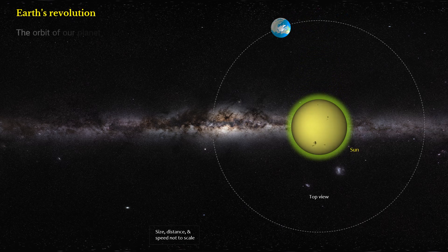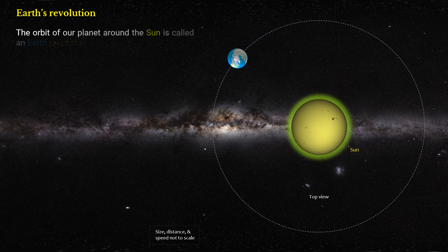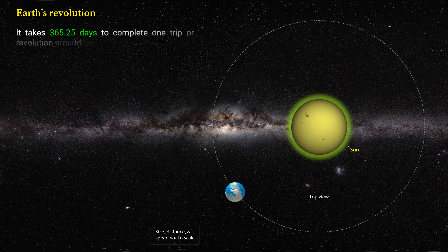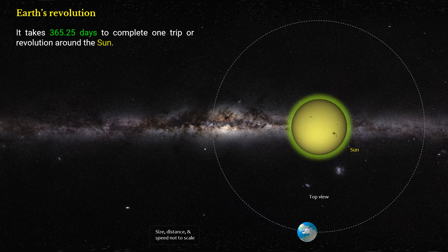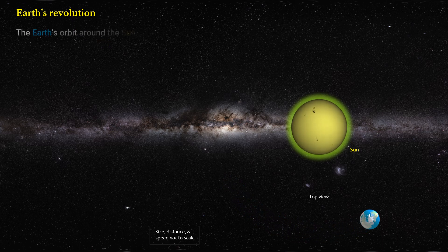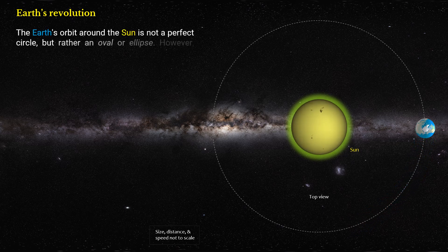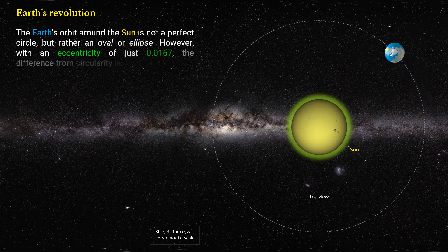The orbit of our planet around the Sun is called an Earth revolution. It takes 365.25 days to complete one trip or revolution around the Sun. The Earth's orbit around the Sun is not a perfect circle, but rather an oval or ellipse. However, with an eccentricity of just 0.0167, the difference from circularity is very minimal.